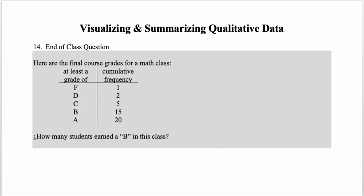To close, here is the end-of-class question. We have information for the final course grades for a math class, presented as a cumulative frequency distribution table. The question is to determine how many people earned a B in the class — not a grade of 'at least B,' but specifically a grade of B.